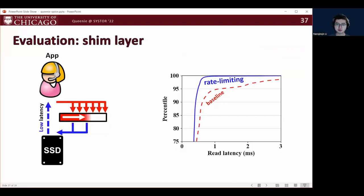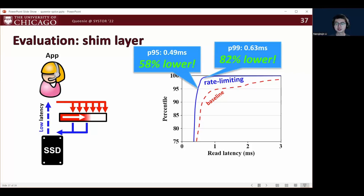In contrast, when we apply the shame layer, the CDF curve shows a much better tail behavior. The 95th percentile is 58% lower than the baseline. And the 99th percentile is only slightly higher than the 95th percentile and 82% lower than the baseline.